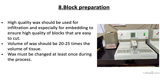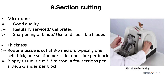After sectioning, we prepare a block. High quality wax should be used for infiltration and embedding to ensure high-quality blocks that are easy to cut. The volume of wax should be 20 to 25 times the volume of the tissue, and the wax should be changed at least once during the process.